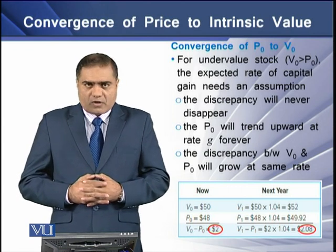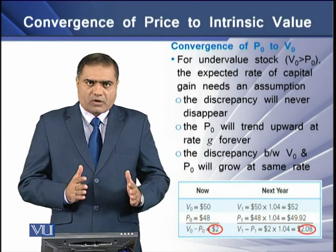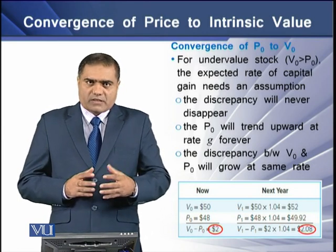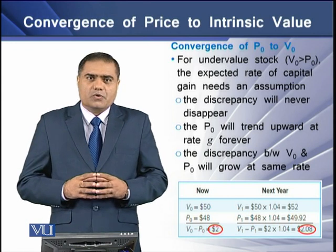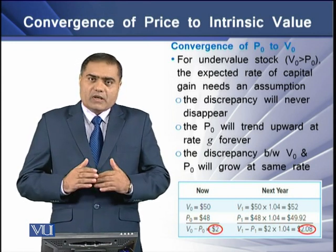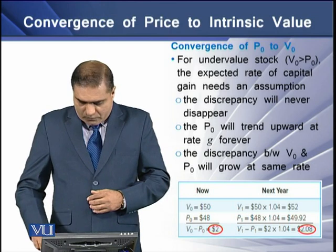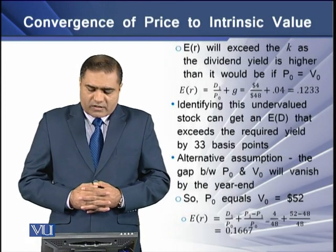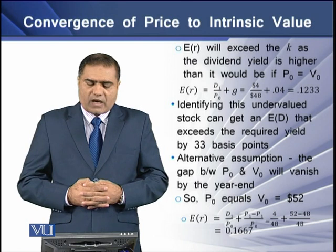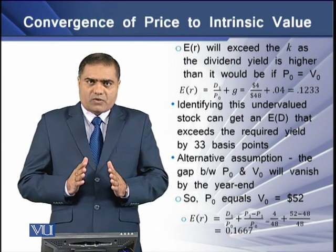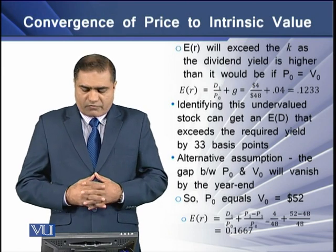We can see this discrepancy in our example: for the current year the discrepancy is equal to two dollars, which is the difference between v0 and p0. For next year the discrepancy remains at two, but the value is 2.08, so this discrepancy is also growing for the second year. This means the expected return will exceed the required rate of return k, as the dividend yield is higher than it would be if the current market price p0 were equal to its intrinsic value.